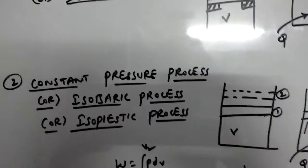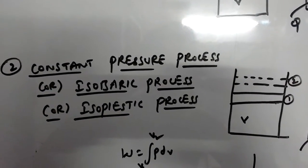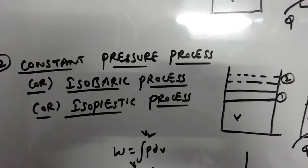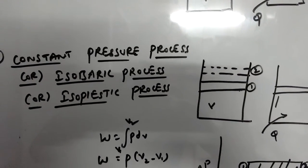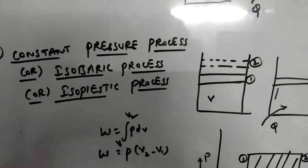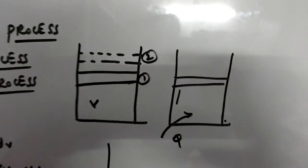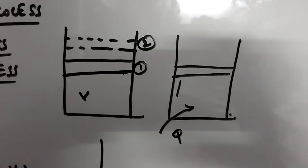If we consider a constant pressure process or isobaric process or isopiestic process, we can derive the equation by considering the same example of piston and cylinder arrangement.